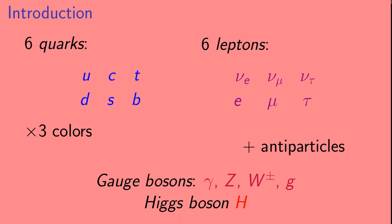Okay, so first, let's take a look at the particle content of the standard model. We have 6 quarks, 6 leptons, the gauge bosons, which are the photon Z, W plus and minus, and the gluons, and the Higgs boson.